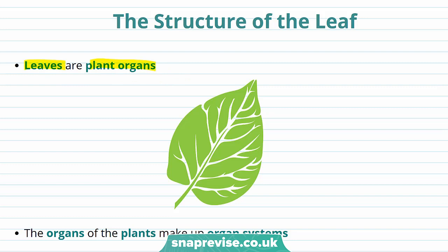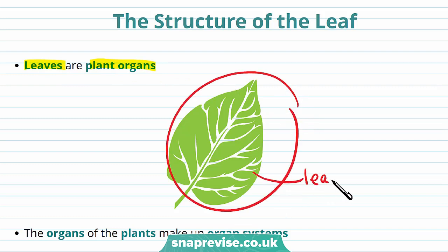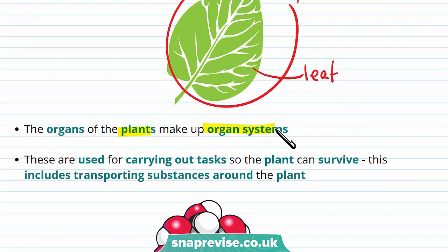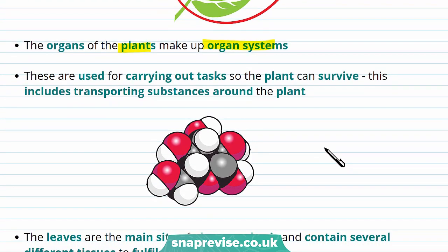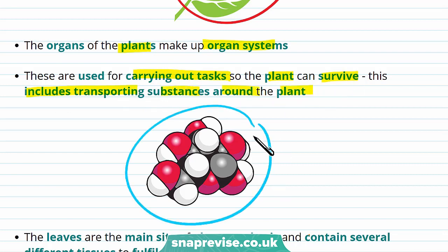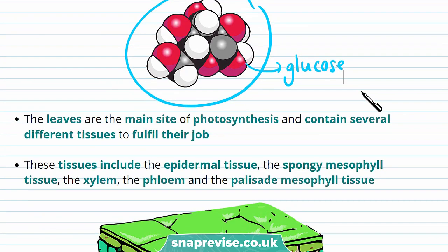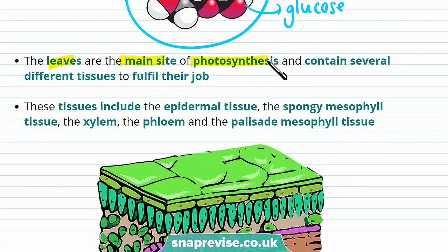Leaves are plant organs. In this diagram a leaf looks fairly simple, but actually they contain lots of different tissues which I'll be going through in this video. All these different tissues make up organs, and the organs of plants make up organ systems. These organ systems are extremely useful because they carry out tasks so the plant can survive, including transporting substances around the plant. Glucose is one of these substances and it's transported around the plant so plants can respire. Most plants need leaves to survive because leaves are the main site of photosynthesis and they contain several different tissues to help fulfil this job.